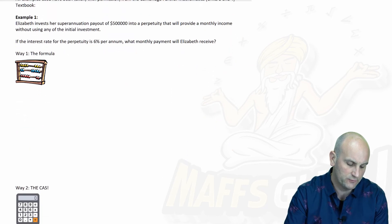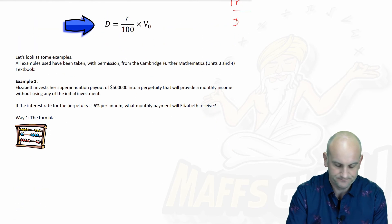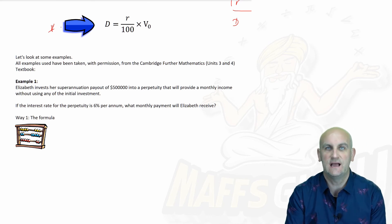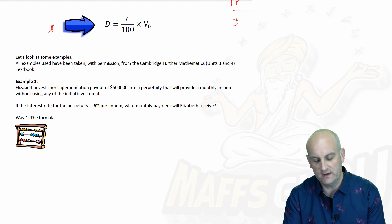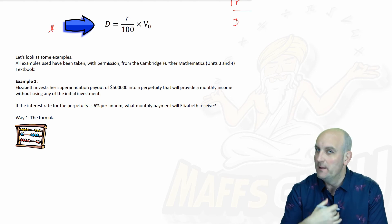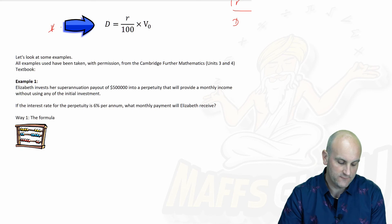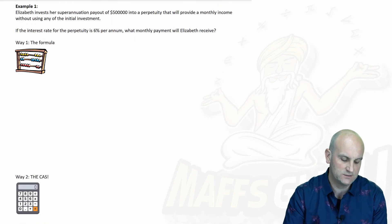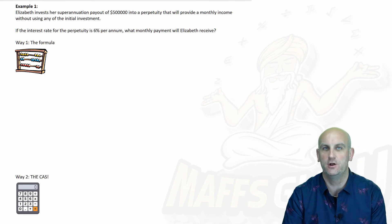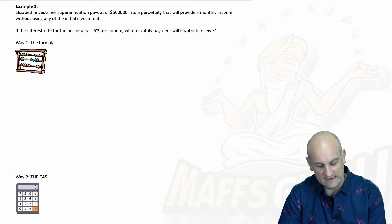Let's have a look at some examples. Theoretically speaking, if we know the formula as we have here, D, which is our regular payment or interest payment, is given by the rate of interest divided by 100 times V0. Bang it in your summary book and life goes on. So Elizabeth is investing her superannuation payout of half a million dollars. Sounds a lot, doesn't it? Sadly not really.